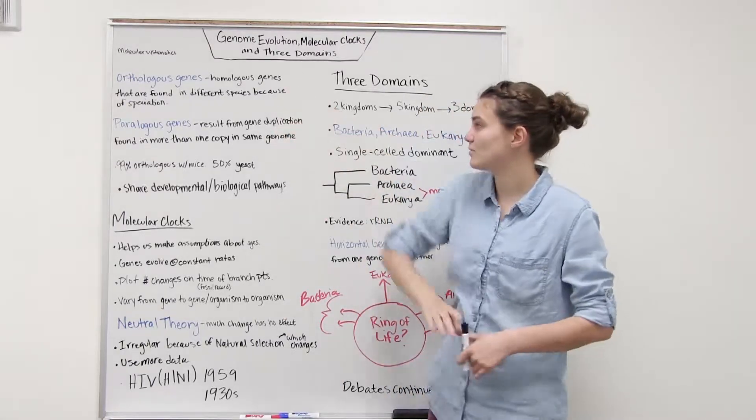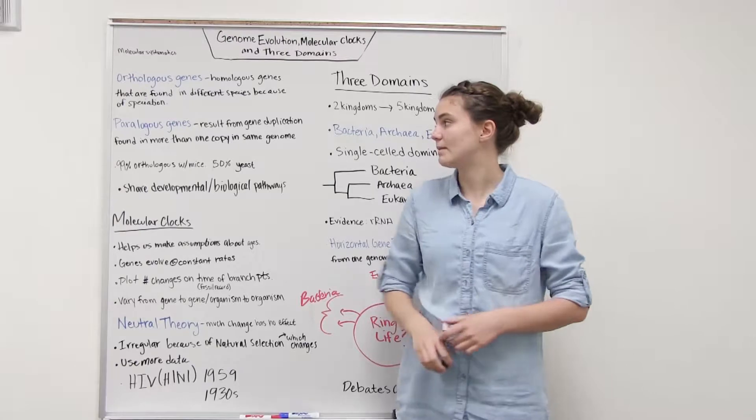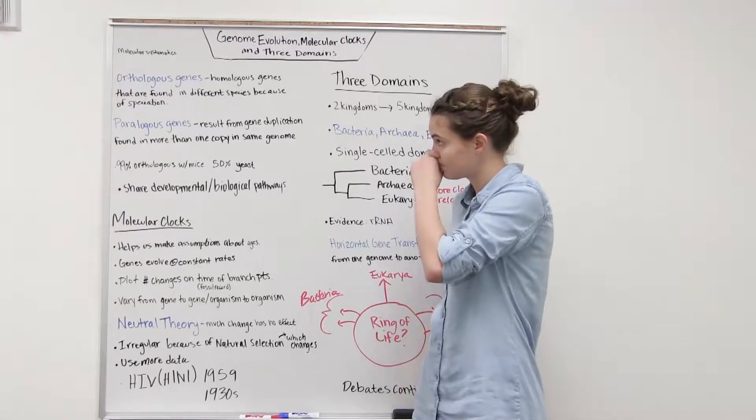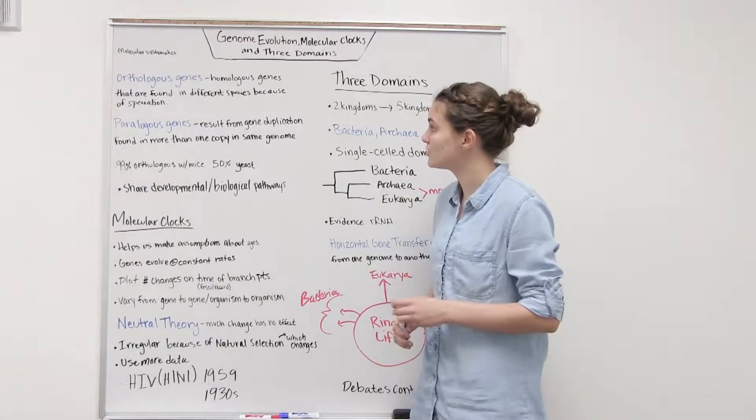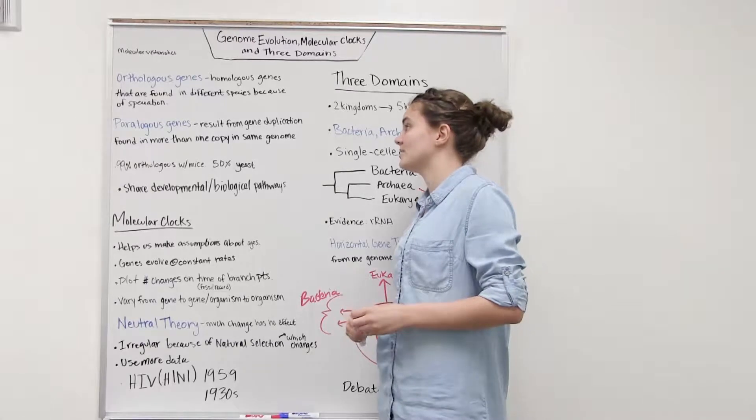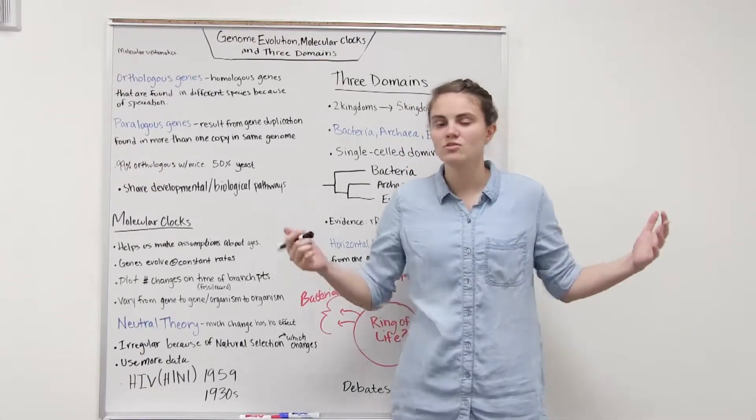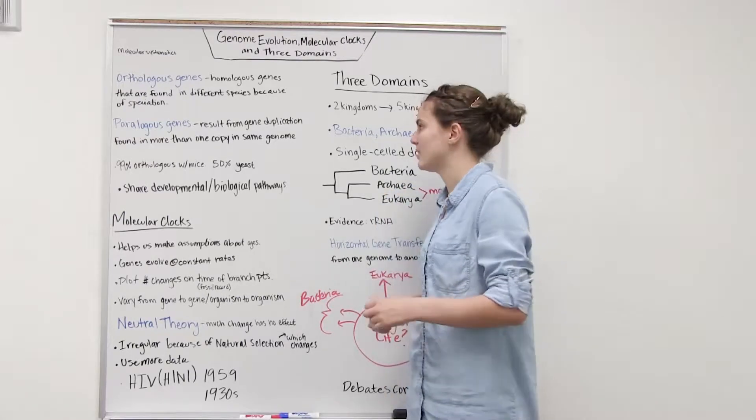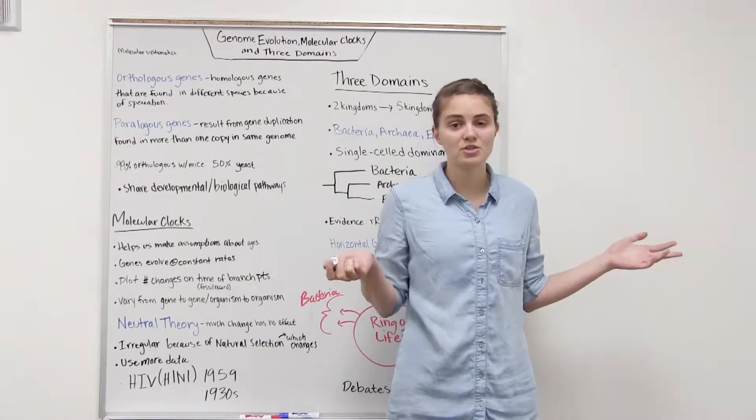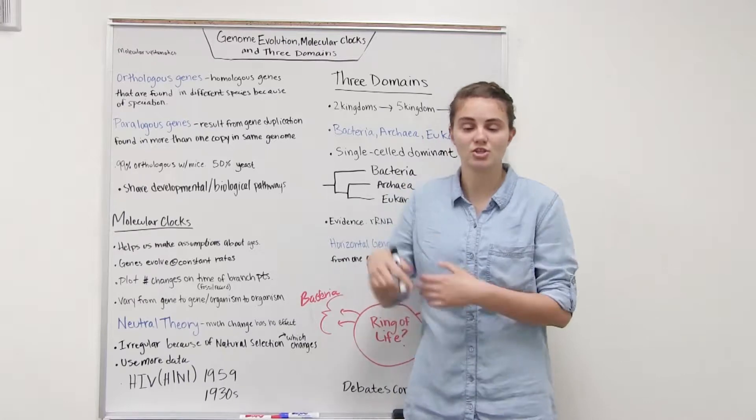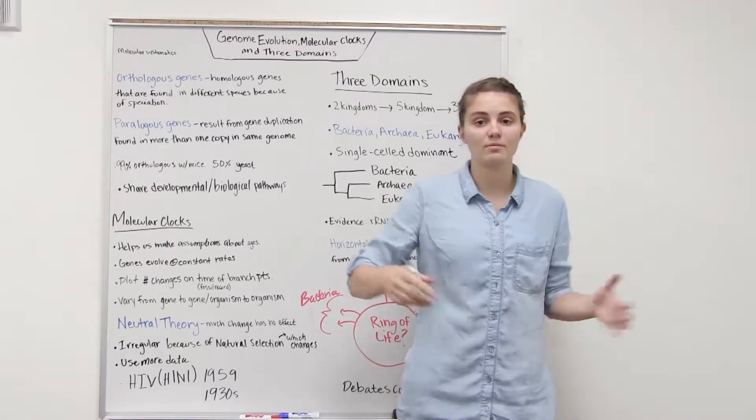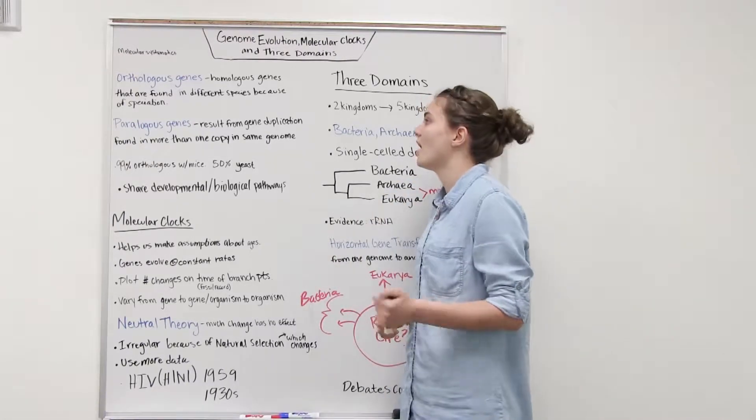Two things that you have to be familiar with are orthologous genes and paralogous genes. Orthologous genes are homologous genes that are found in different species because of speciation. That's kind of self-explanatory and makes sense. Two species have similar genetic sequences because they share a common ancestor and so they both inherited those similar genomes.